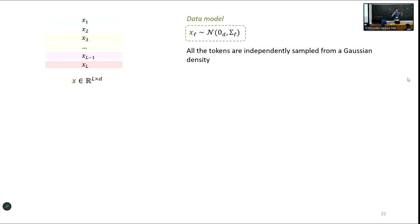The data model we consider is a simplified model for random sentences. Each input is an L×d matrix — a sequence of L tokens embedded in dimension d. Each token is independently sampled from a Gaussian distribution, independent from other tokens, so the words are not statistically correlated. Of course we could complexify that, but this already yields really interesting phenomenology.